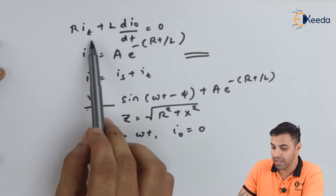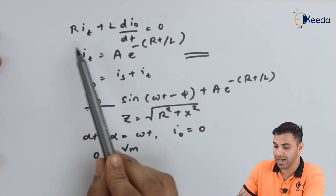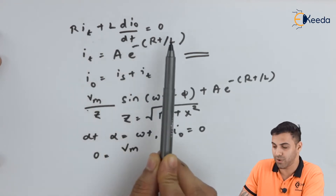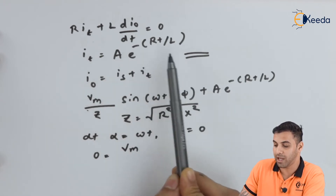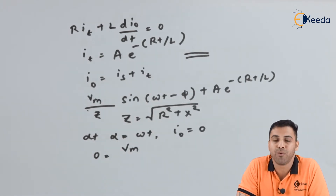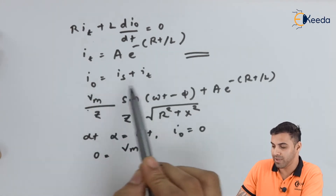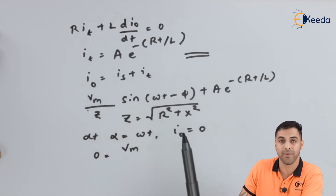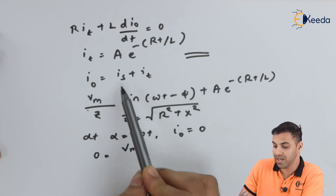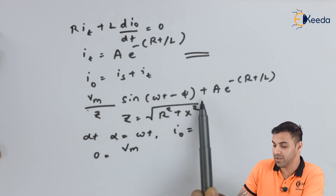Now let's talk about the transient operation. Let I_t be the transient current. For the transient state, the equation becomes R·i_t + L·di₀/dt = 0. Solving that, we get I_t = A·e^(−Rt/L). The output current equals the steady state current plus the transient current: I₀ = I_s + I_t. Substituting both expressions, we get the final expression for I₀ = (Vm/Z)·sin(ωt − φ) + A·e^(−Rt/L).